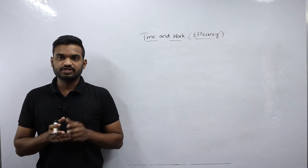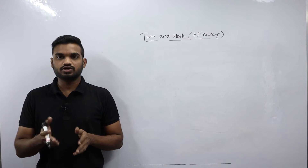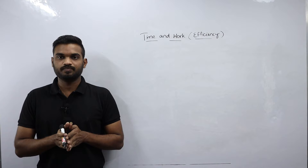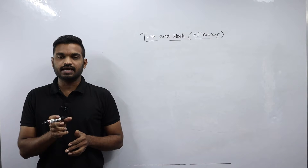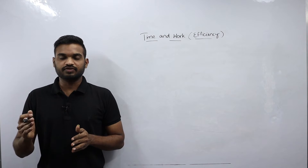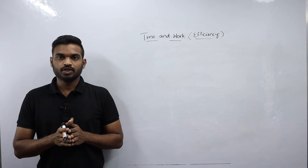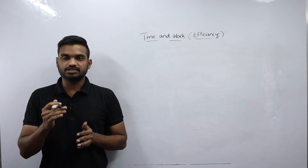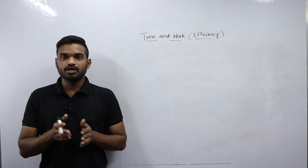Now in this tutorial we will discuss efficiency in detail. Efficiency is nothing but the rate of work, or we can define it as the amount of work done by a person in one hour or one day. Total work in time and work can be defined as efficiency of a person into total time taken by the person. By considering that definition I will derive how to write efficiency and total time.